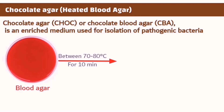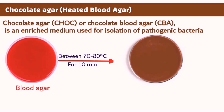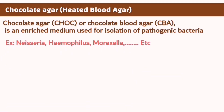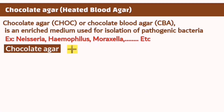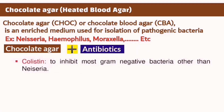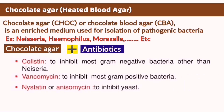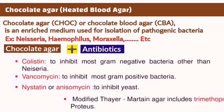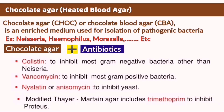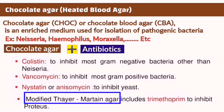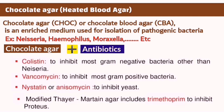The newly formed chocolate agar can support the growth of organisms that cannot grow on other media, such as Neisseria and Haemophilus. Antibiotics such as colistin or trimethoprim can be added to prevent the growth of gram-negative bacteria other than Neisseria. Vancomycin can inhibit gram-positive bacteria, or Nystatin can prevent yeast growth. All four substances are added to form modified Thayer-Martin agar, considered the best selective agar for Neisseria.